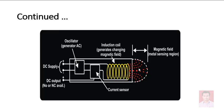Looking at the construction: the metallic tube has an oscillator that generates an AC signal, a current sensor that senses the change in current, and a DC supply. The output is connected to a relay — normally open or normally closed depending on the requirement. There is a coil that generates a changing magnetic field, and within the active surface range, that magnetic field is generated to sense the metal object.